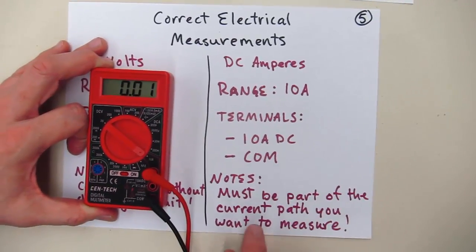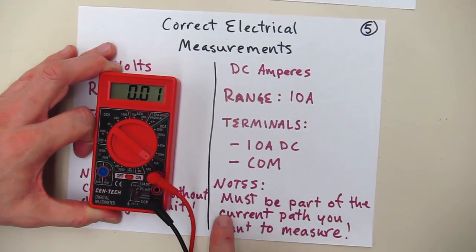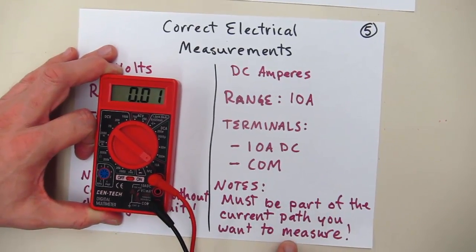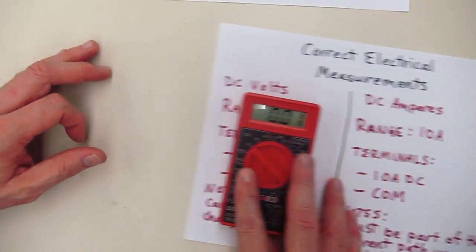Now, the most important part, of course, about measuring current is that your meter has to be in the path of the circuit, the current you want to measure. Let's revisit that one more time in particular because it's so important here.